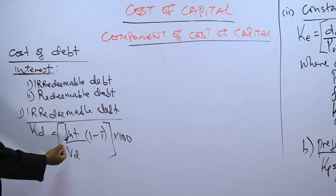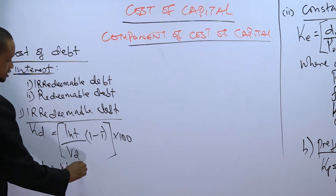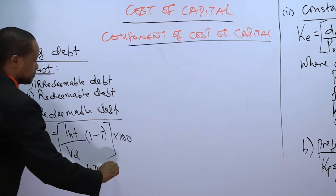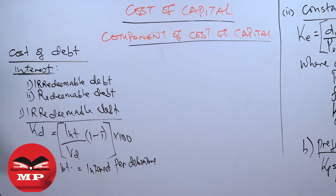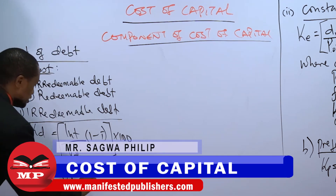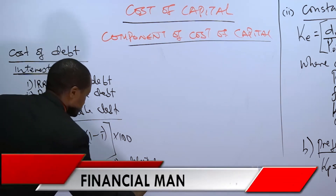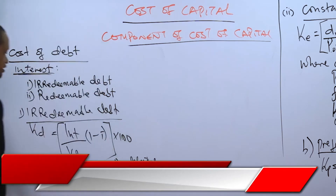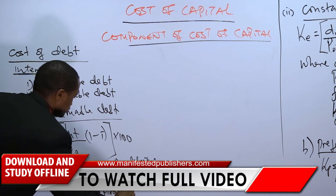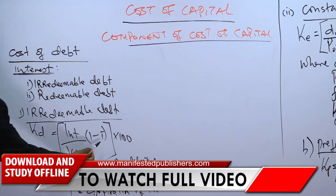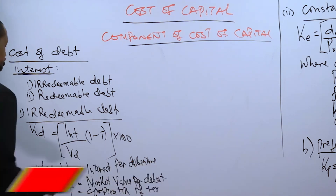For irredeemable debt, the cost of debt KD = (INT / VD) × (1 − T) × 100, where INT is the interest per debenture, VD is the market value per debenture, and T is the prevailing corporation tax rate. You multiply by 100 to express it as a percentage.